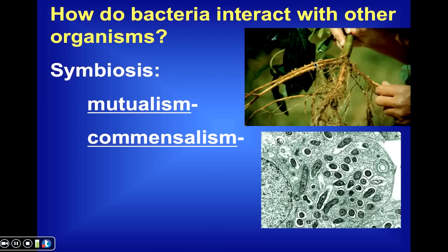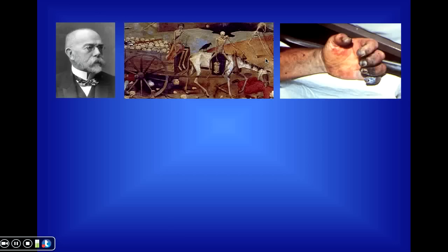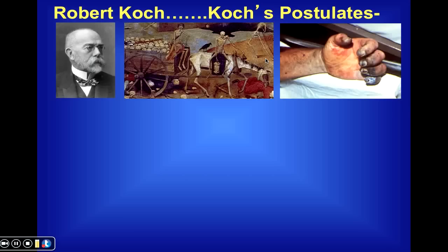In contrast, commensalism refers to the idea whereby two or more species live closely together, one species benefits, but the other species doesn't necessarily benefit — nor is it harmed. The other extreme would be parasitism, where one species benefits at the expense of the other species. This, of course, leads to a brief discussion of disease.